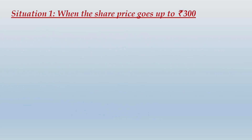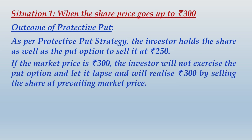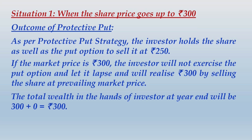Situation 1 — the share price goes up to rupees 300. Outcome of protective put: as per the protective put strategy, the investor holds the share as well as the put option to sell it at rupees 250. If the market price is rupees 300, the investor will not exercise the put option and will let it lapse, realizing rupees 300 by selling the share at the prevailing market price. The total wealth in the hand of the investor at end of the year will be 300 plus 0 equals rupees 300.